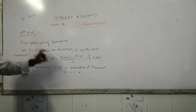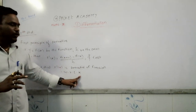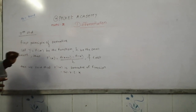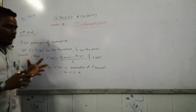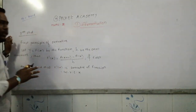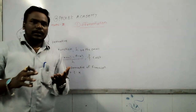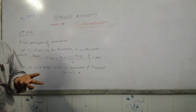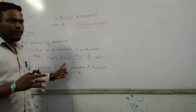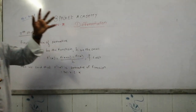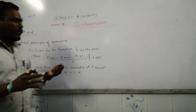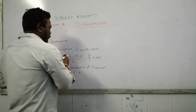Here, the variable is x, so we are finding the derivative with respect to x. f'(x) is the first principle. On the basis of the first principle, we have seen lots of formulae. For example: the derivative of x² is 2x, derivative of x is 1, derivative of a constant is 0, derivative of sin x is cos x, and derivative of cos x is minus sin x. All these formulae come from the first principle.